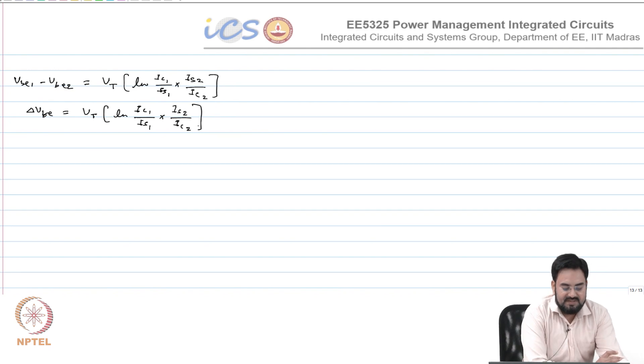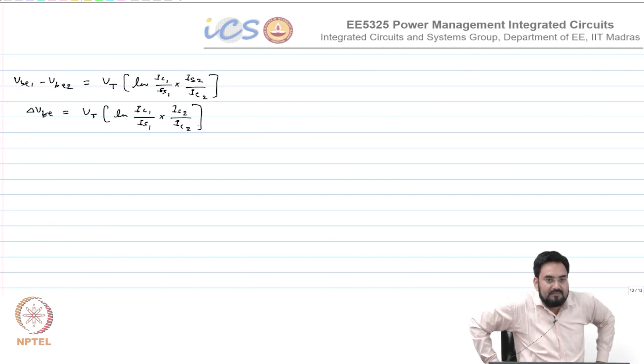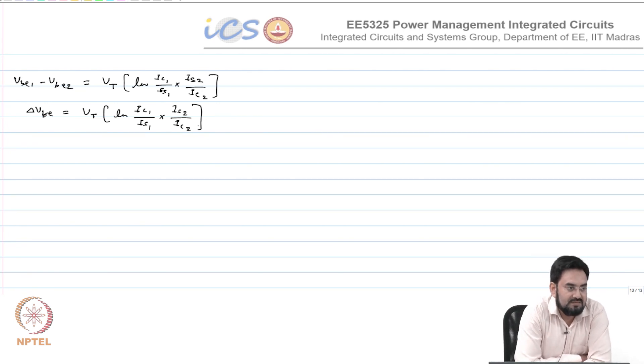So I can have two situations here. In what condition will IS1 and IS2 be the same? Same area. So if you have same area then they will be same and they will cancel out. And if I have the same current, then your delta VB will be zero.